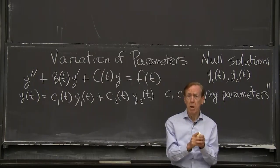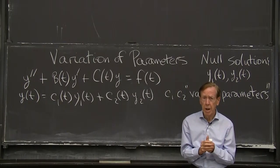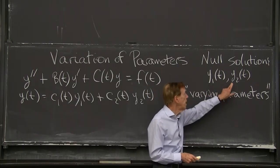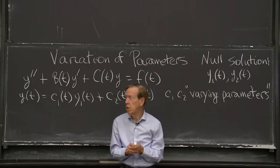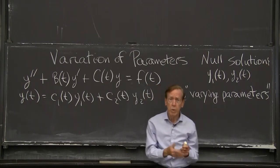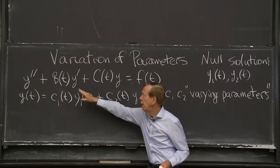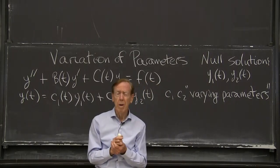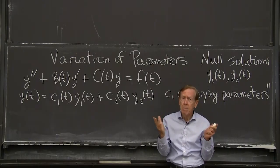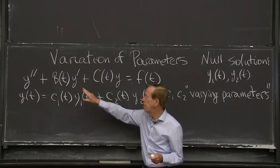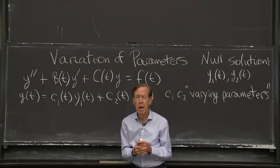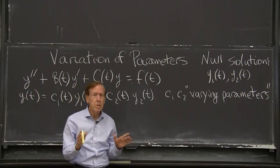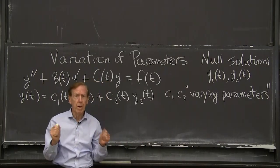So what's the idea? We're looking for a particular solution. Today is about a particular solution. We have to know two null solutions to get started. So we must know these, y1 and y2, null solutions with f equals 0. And of course, we do know two null solutions when those coefficients b and c are constants. And we'll do it as a good example, as the most important example. But maybe sometimes we can find the null solutions when b and c are changing in time, time varying. Those problems are not easy to solve. But it's really constant coefficients that we know it works.